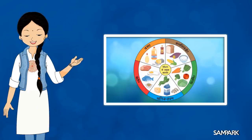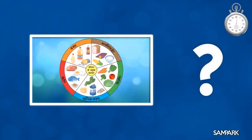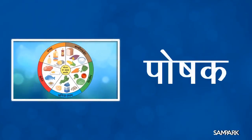इस चित्र में क्या दिखाया गया है बच्चों? ये भोजन में पाए जाने वाले कार्बोहाइड्रेट, विटामिन, खनिज लवण, प्रोटीन, वसा आदि घटक हैं जो हमारे शरीर के पोषण के लिए जरूरी होते हैं। इन्हें क्या कहते हैं? इन्हें पोषक कहते हैं।